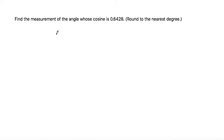So to set up this problem, we know that the cosine of the angle is this number. We can write the cosine of some angle is equal to 0.6428.